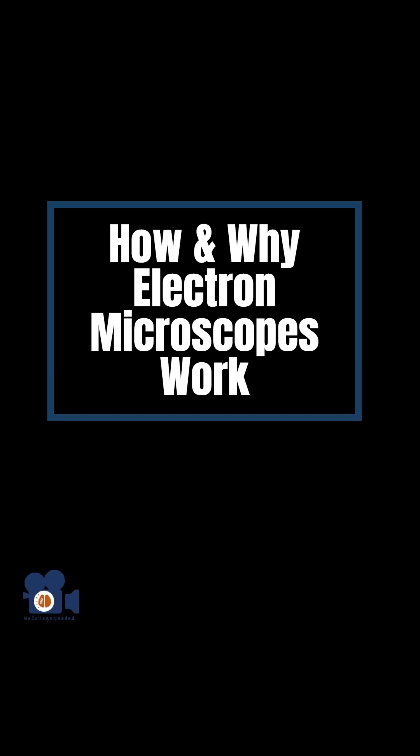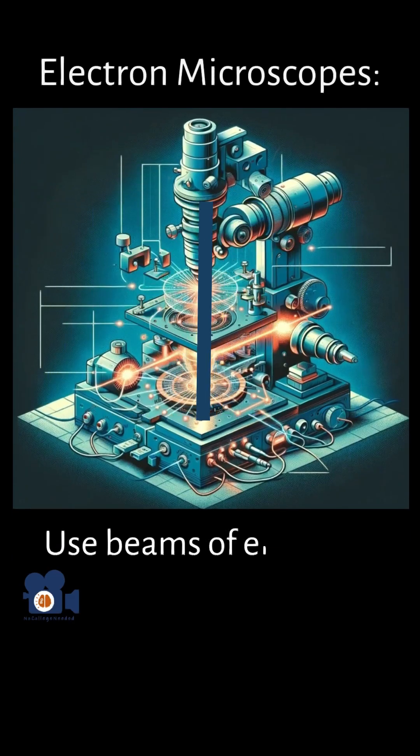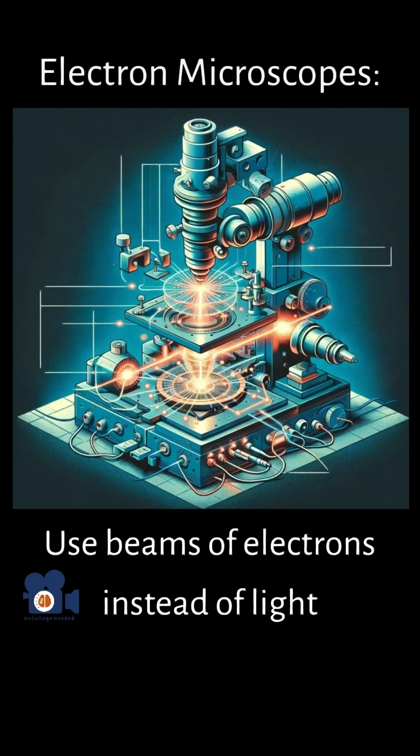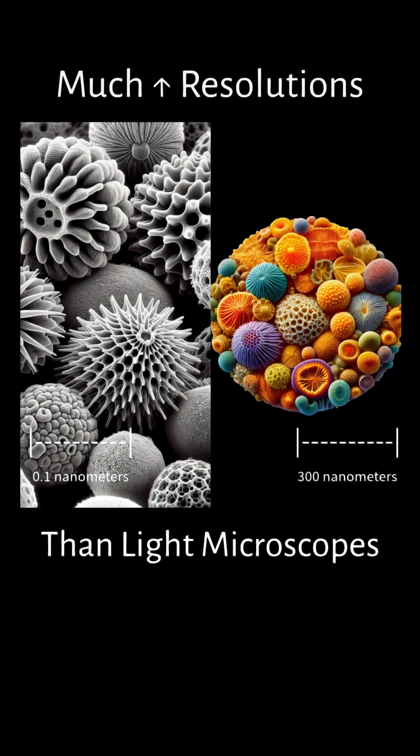This is my PhD in chemistry, and this is how and why electron microscopes work. Electron microscopes use beams of electrons instead of light to create images of samples at much higher resolutions than light microscopes.